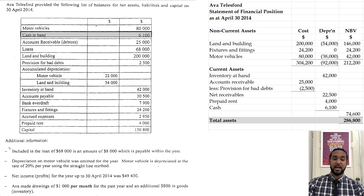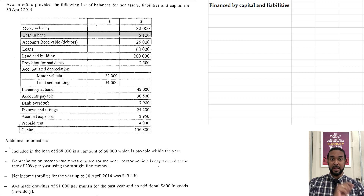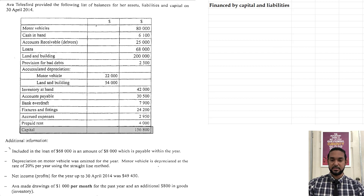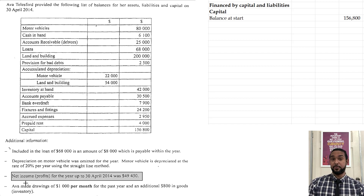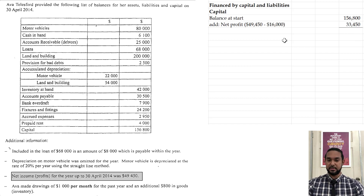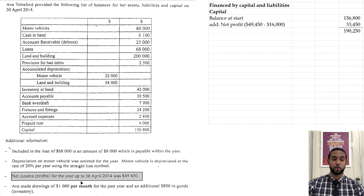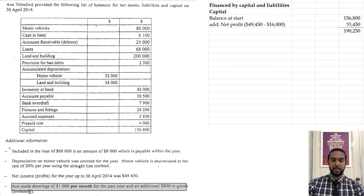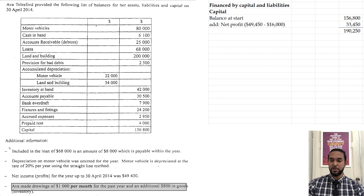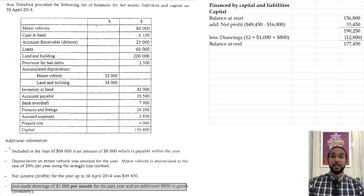Next we have the financing section — capital and liabilities. Capital is more permanent than liabilities, so capital comes first with an opening balance of $156,800. Net profit is added to that, but remember the net profit of $49,450 needs to be adjusted for the omitted depreciation of $16,000, giving us $33,450. The subtotal is $190,250. Don't forget the drawings: $1,000 per month for 12 months is $12,000, plus an additional $800 in goods, totalling $12,800 in drawings. This leaves us with closing capital of $177,450.